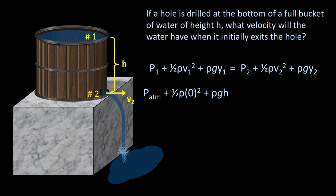Next, we have p2. This may or may not seem intuitive, but if point 2 is located just at the lip of the exit hole, the water here is also exposed to atmospheric pressure. So p2 is also p atmosphere. v2 is of course what we are solving for, and y2, or the height of point 2 above the top of the marble block, is zero.